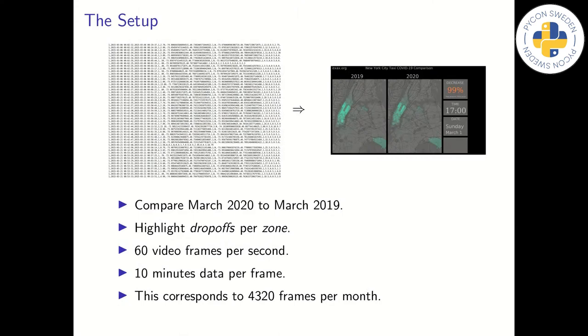The setup for our demo is like this. We want to compare this year to previous year, 2020 to 2019. We count and highlight taxi drop-offs per zone, and we want the video to run smoothly at 60 frames per second in high resolution.